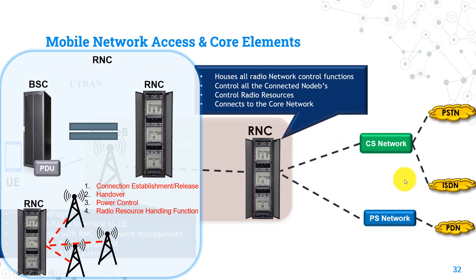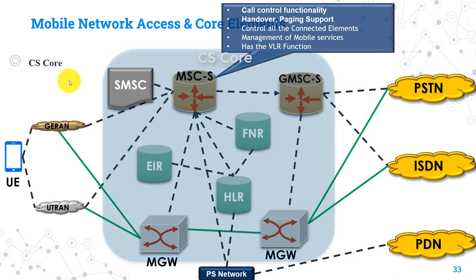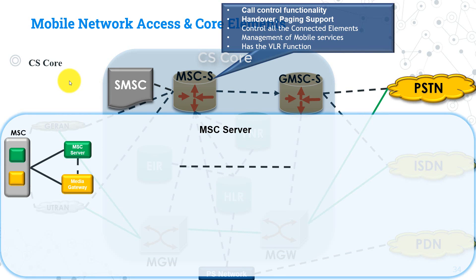Now let's talk about the core part. In 2G and 3G networks, the core is divided into CS Core and PS Core. We will start with the CS Core. CS Core is the network used for enabling voice call services for subscribers. Any 2G or 3G mobile network must have a CS Core to enable services like voice calls, SMS, and interconnection with other mobile operators. CS Core consists of many nodes, the most important being the MSC Server and the Media Gateway — as discussed in the previous lecture, the MSC is split into these two nodes.